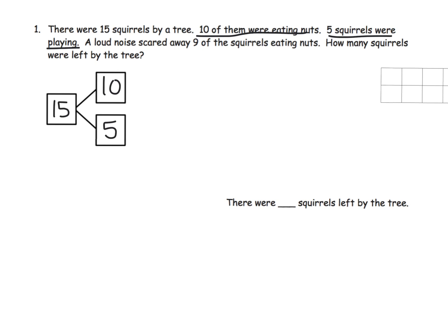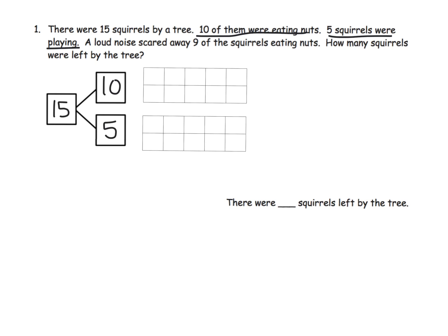A loud noise scared away 9 of the squirrels. Obviously you can't start with the 5 and take away 9, so we're going to start with the 10 and take away 9. In Eureka, they have students draw 10 little circles in a row, but I recommend having 10-frames ready so students can draw their 10-frames — it ensures accurate counting and prevents first graders from miscounting to 9 or 11. So here's our 1, 2, 3, 4, 5, 6, 7, 8, 9, 10, and 5 down here.